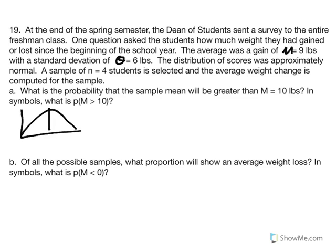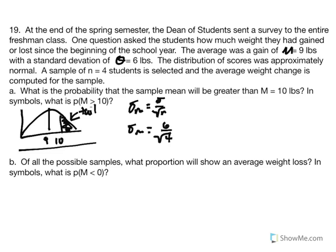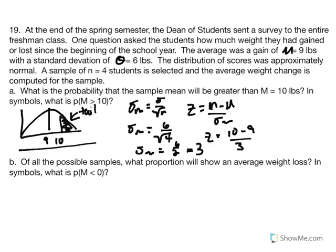We draw our distribution with average weight gain of 9 pounds in the center. We want the probability of sample means above 10, which is the tail. Standard error of the mean equals 6 over square root of 4, which is 6 divided by 2, giving us 3. Our z-score: z equals 10 minus 9 over 3, giving us 0.33. A 10-pound weight gain is 0.33 standard error units above the mean.